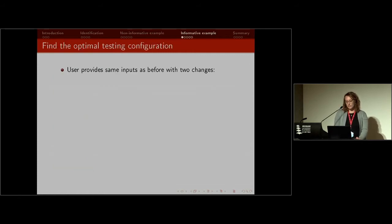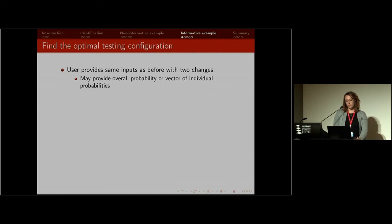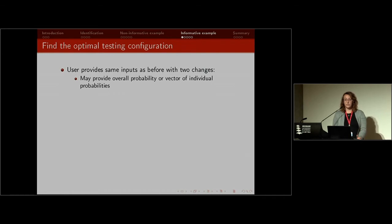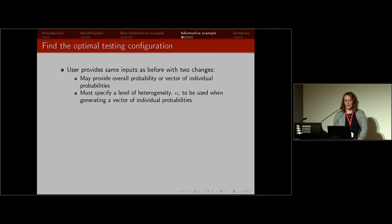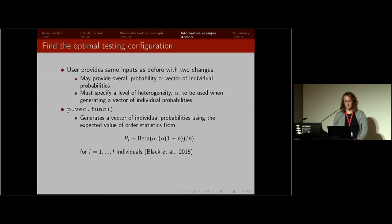Now a quick informative example. The inputs are exactly the same with just two changes. The user can provide an overall probability or a vector of individual probabilities. Say you were trying to find the optimal testing configuration given 10 individuals whose risk probabilities you knew — you could input their individual risk probabilities. If you input an overall probability, you need to specify a level of heterogeneity, which we call alpha, used when generating a vector of individual probabilities using the beta distribution.